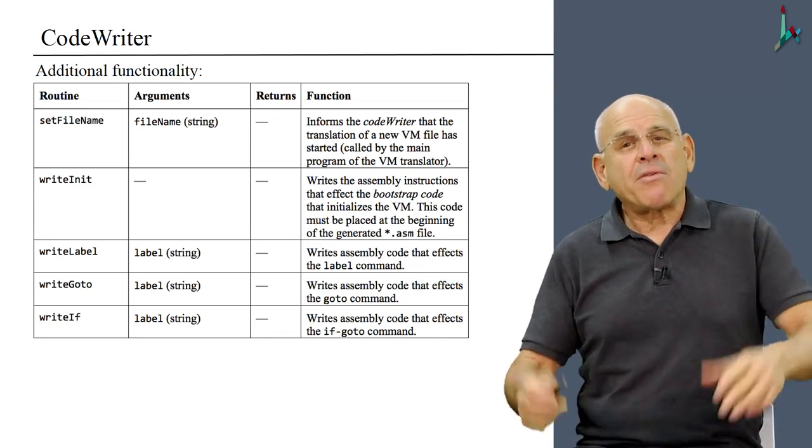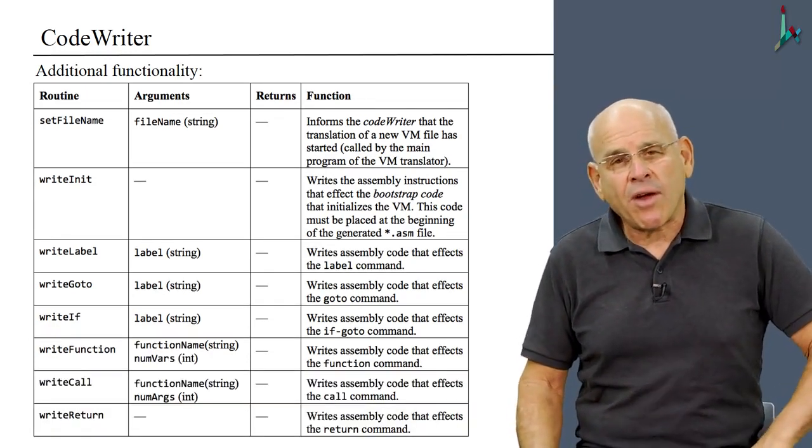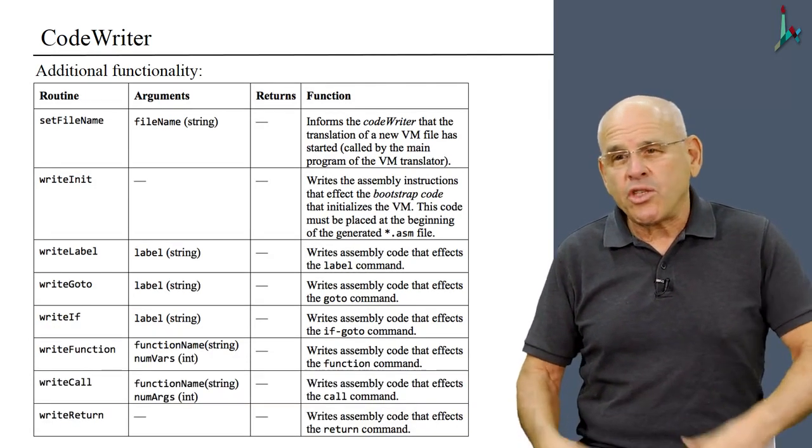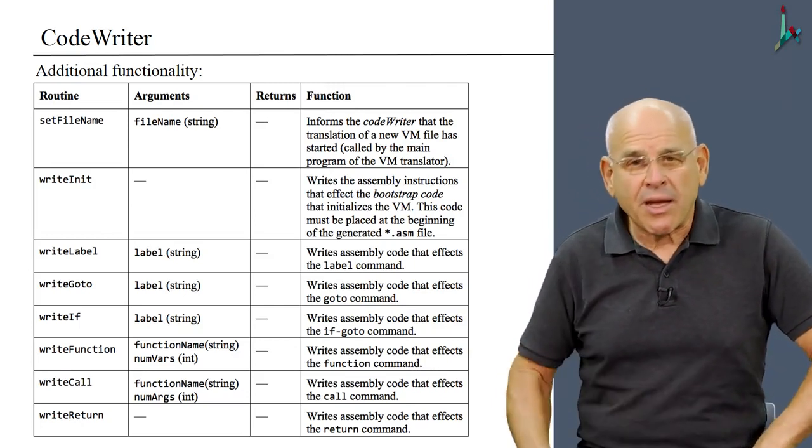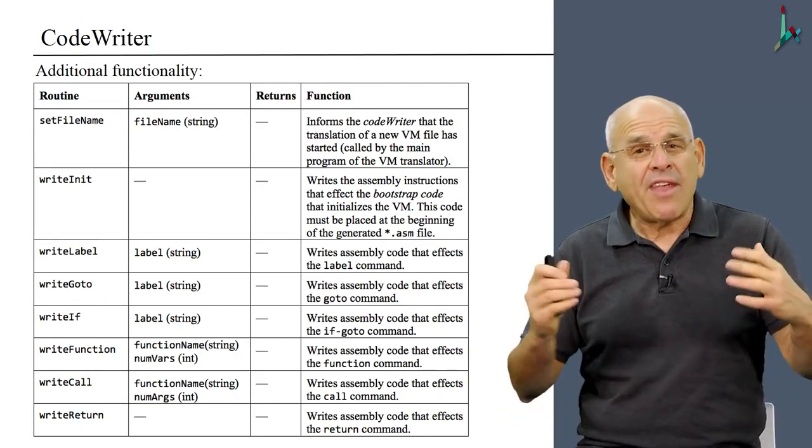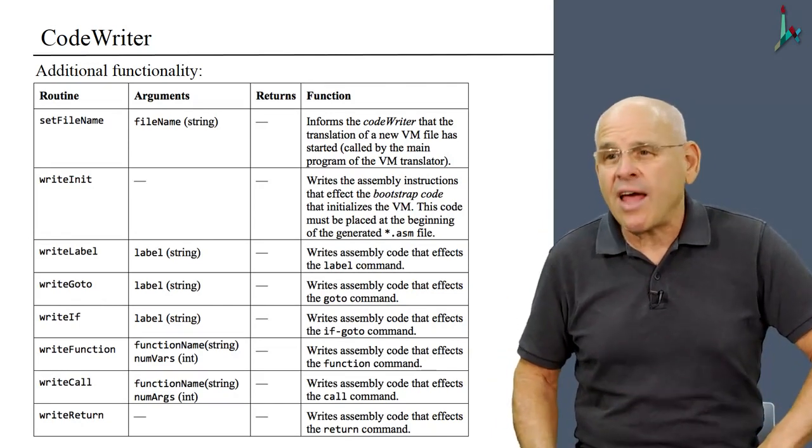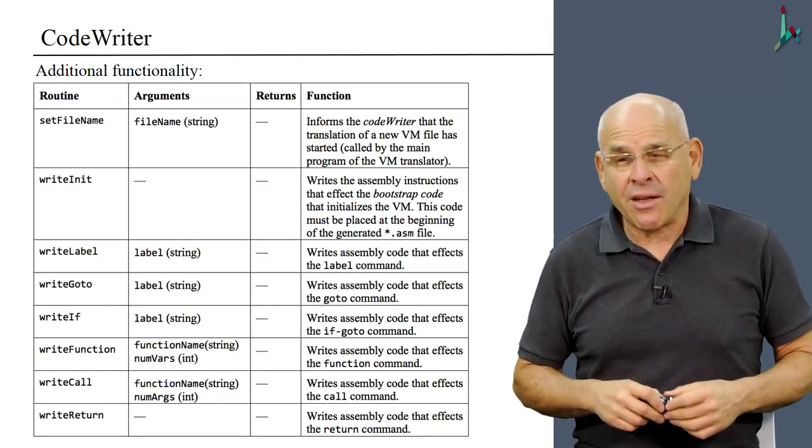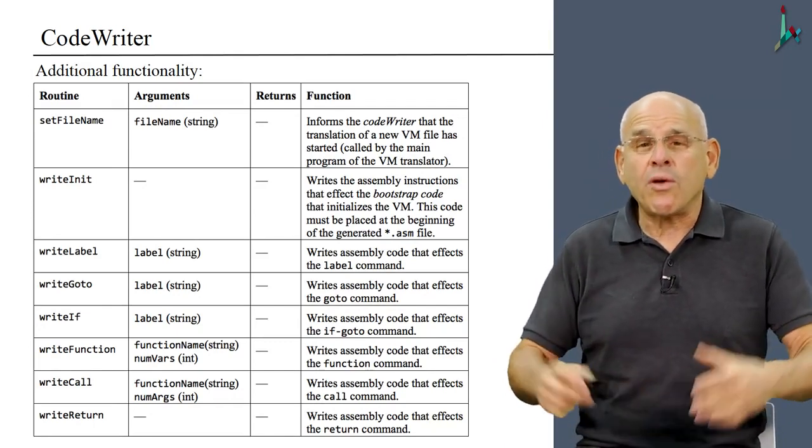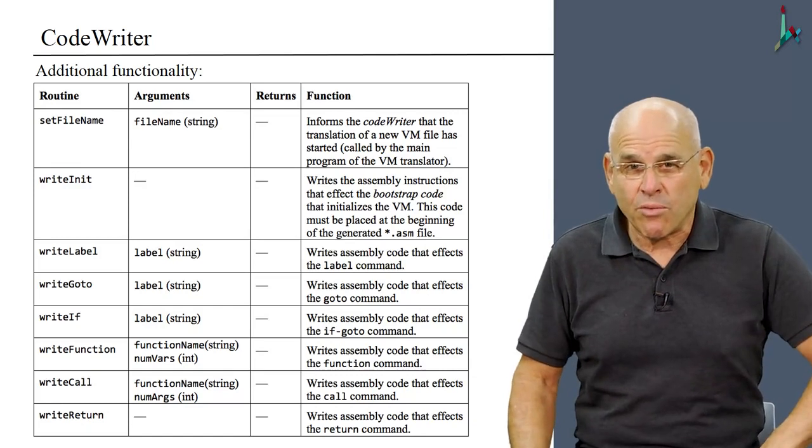And finally, three methods called writeFunction, writeCall, and writeReturn, which produce the assembly code that knows how to take care of the respective VM commands. And that's it. Once you do that, you will have a fully functioning VM translator, and you have implemented a virtual machine.